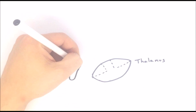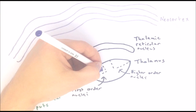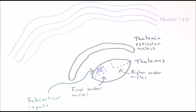We can now see that the thalamus does not act in isolation but coordinates with a number of brain areas. The basic thalamocortical circuit is as follows: subcortical inputs excite the relay cells of first order thalamic nuclei, which send excitatory inputs to layer 4 of the neocortex. On their way to the cortex, they send excitatory inputs to the inhibitory neurons of the thalamic reticular nucleus.